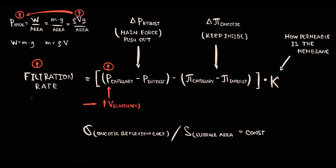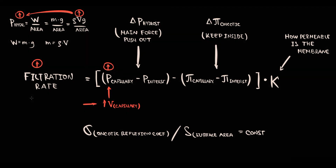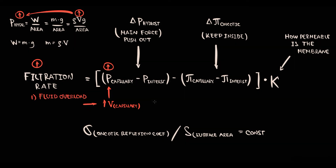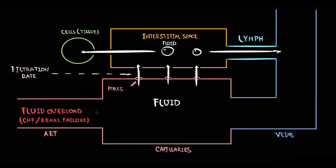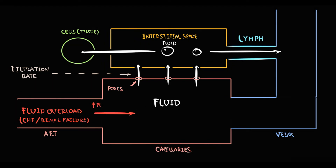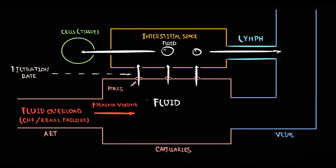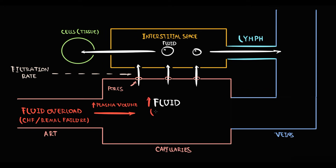Which factors can cause an increase in fluid volume inside the capillary? First, fluid overload. The two most common conditions are chronic heart failure and renal failure. In cardiac disease, because the left ventricle cannot deliver enough blood to the kidneys, more fluid remains in circulation. In renal failure, the organism simply cannot excrete enough fluid. In both cases, plasma volume increases. The higher the total fluid volume in the cardiovascular system, the higher the capillary hydrostatic pressure, and therefore the higher the filtration rate, so a larger volume of fluid enters the interstitial space.